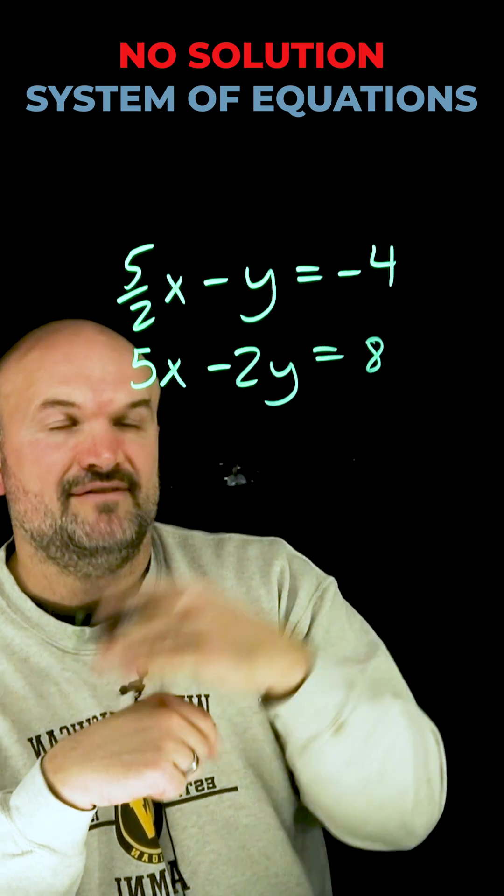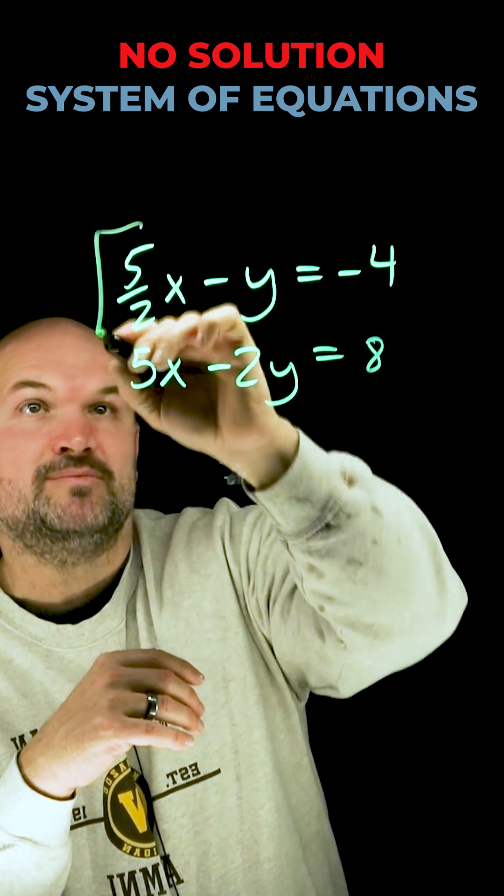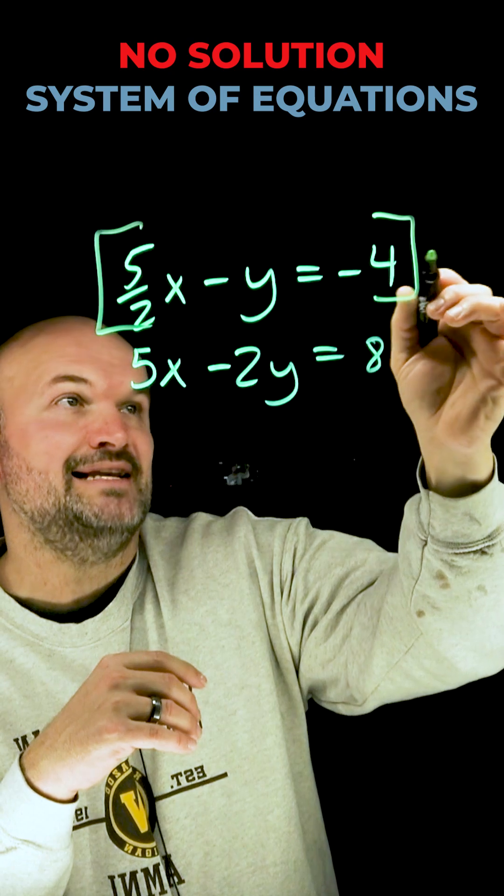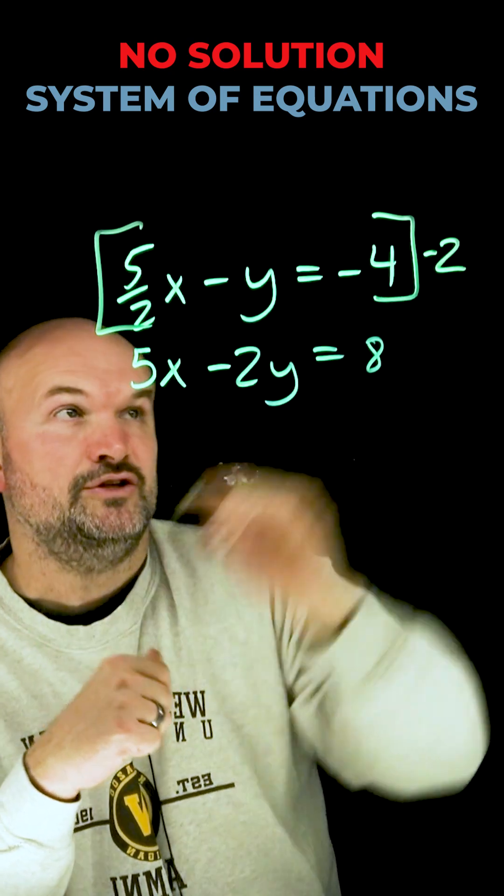So I have a negative 2 and a negative 1. If I want them to be exactly the same, I can multiply the top equation by a negative 2. That is now going to give me a positive 2 in the numerator.